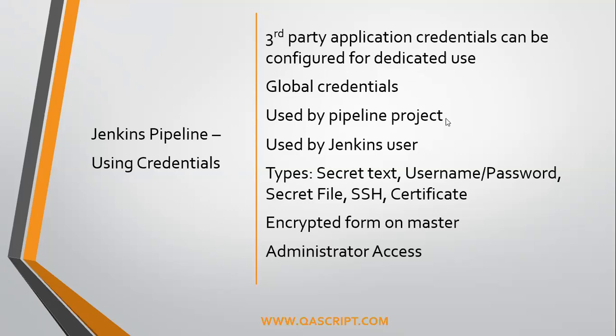While working with Jenkins, we come across a lot of third party applications which are configured in Jenkins. For those third party applications, we will require credentials to either log into that app or use some services, like we can use the AWS cloud, or we can use a Git token to get into the source code management. There could be a number of third party applications which require credentials and for them to work, we need to configure them in Jenkins.